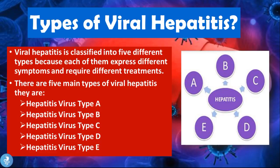In today's video we are going to focus on a specific type of viral Hepatitis. Viral Hepatitis is classified into five different types because each one expresses different symptoms and requires different forms of treatment. The five main types are Hepatitis virus type A, B, C, D, and E. In today's video we are going to focus on viral Hepatitis A, which is also commonly known as Hep A.